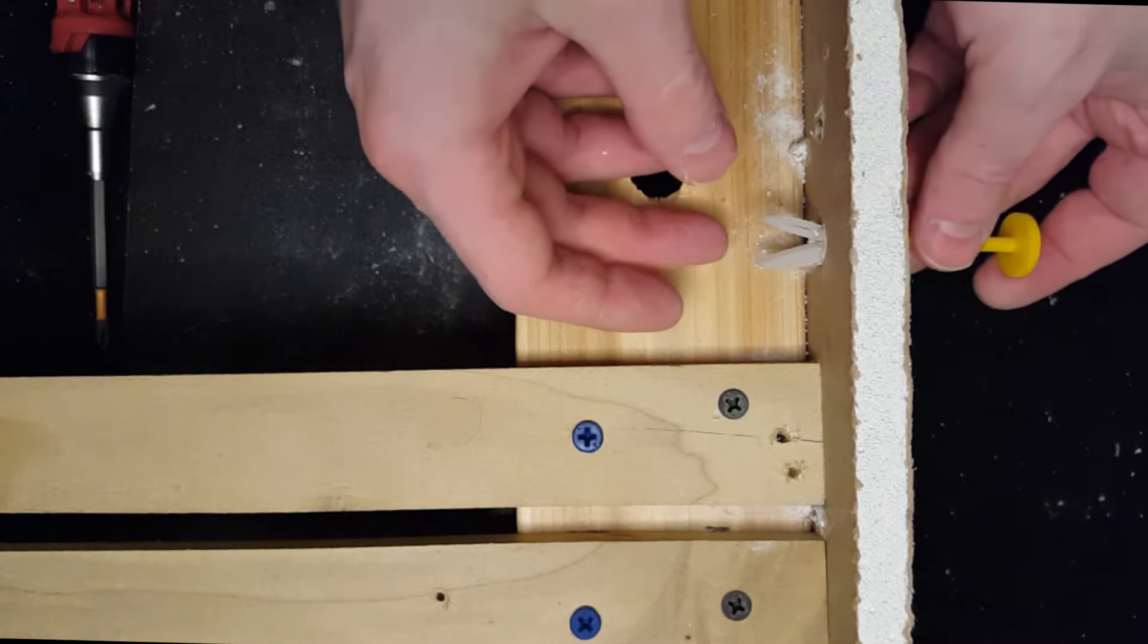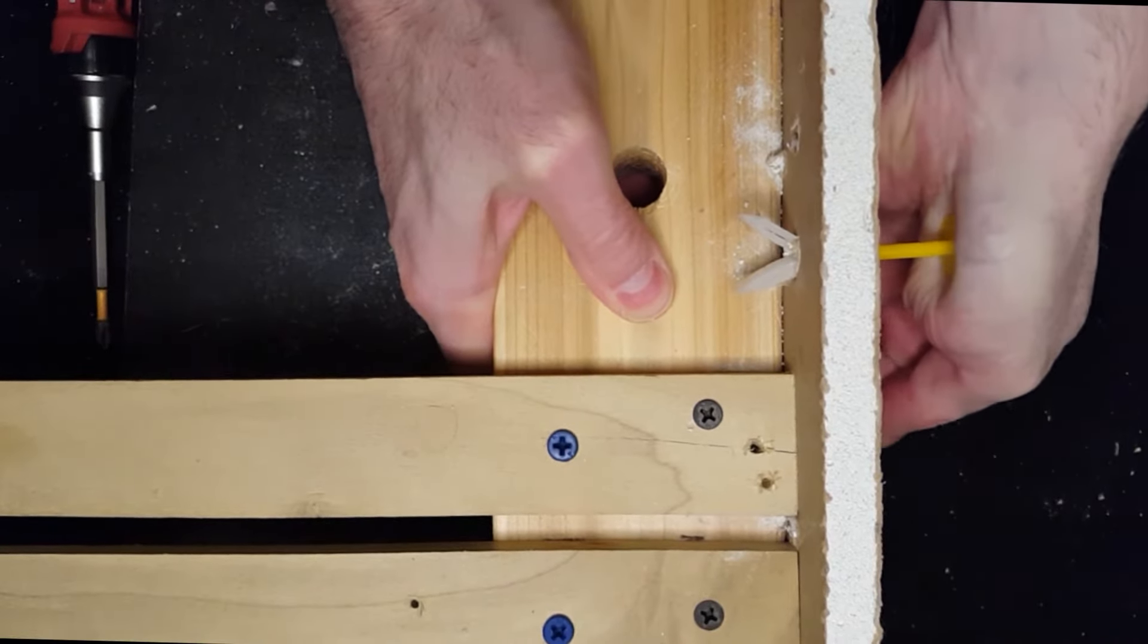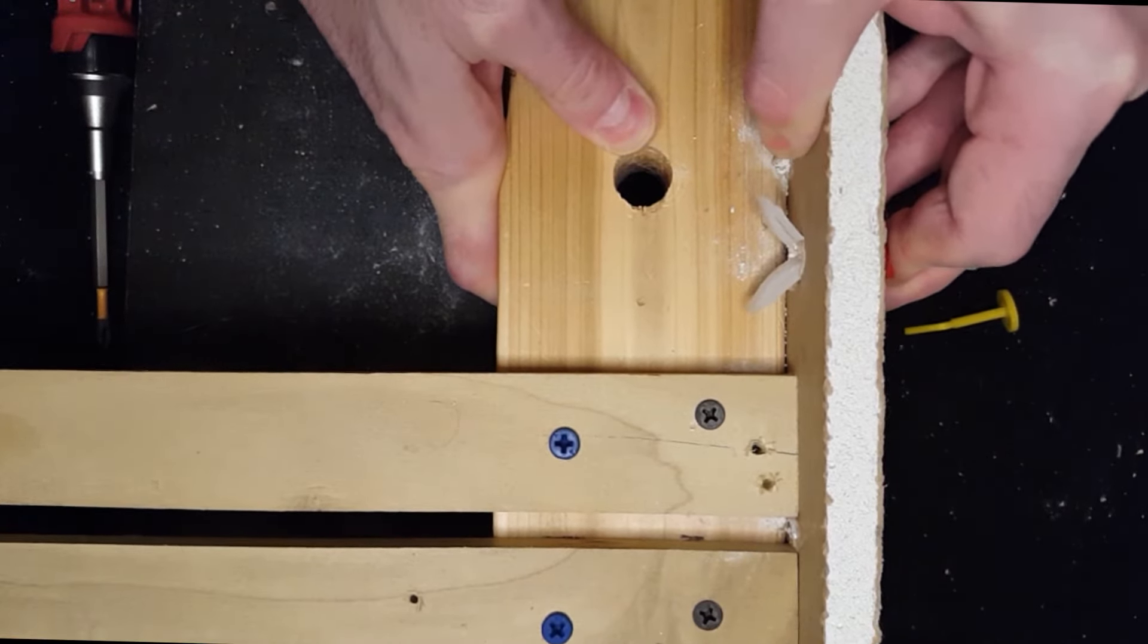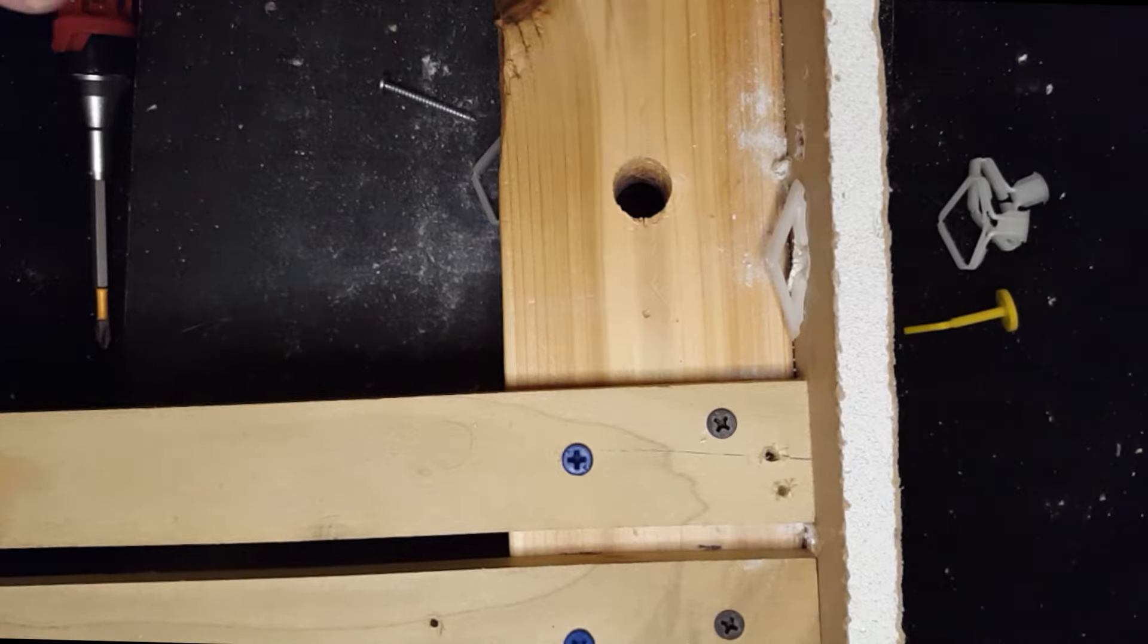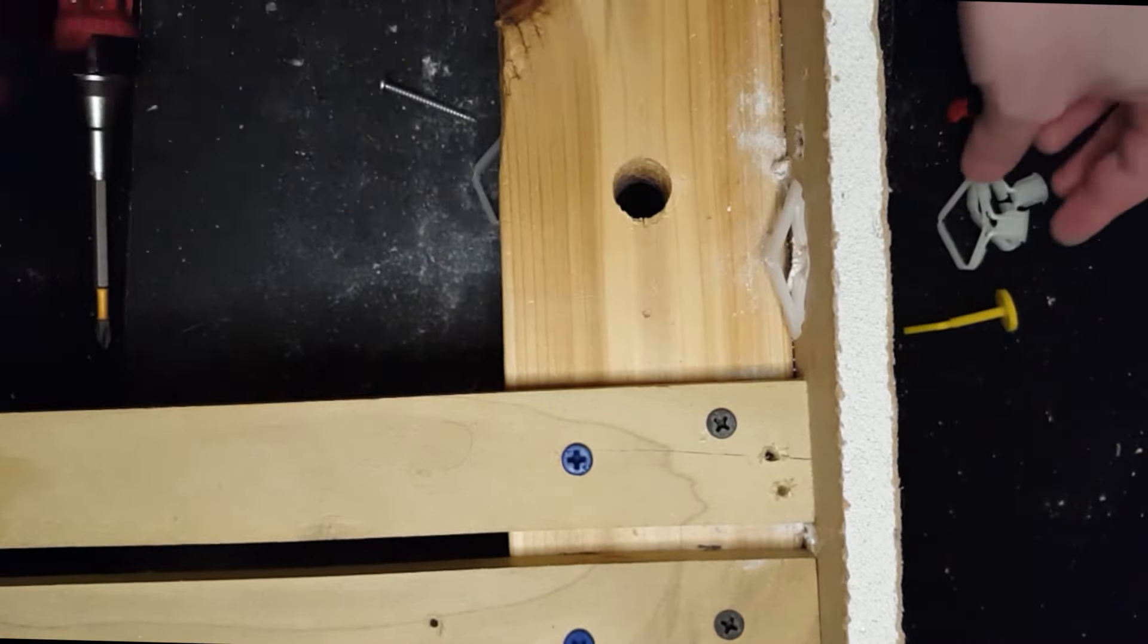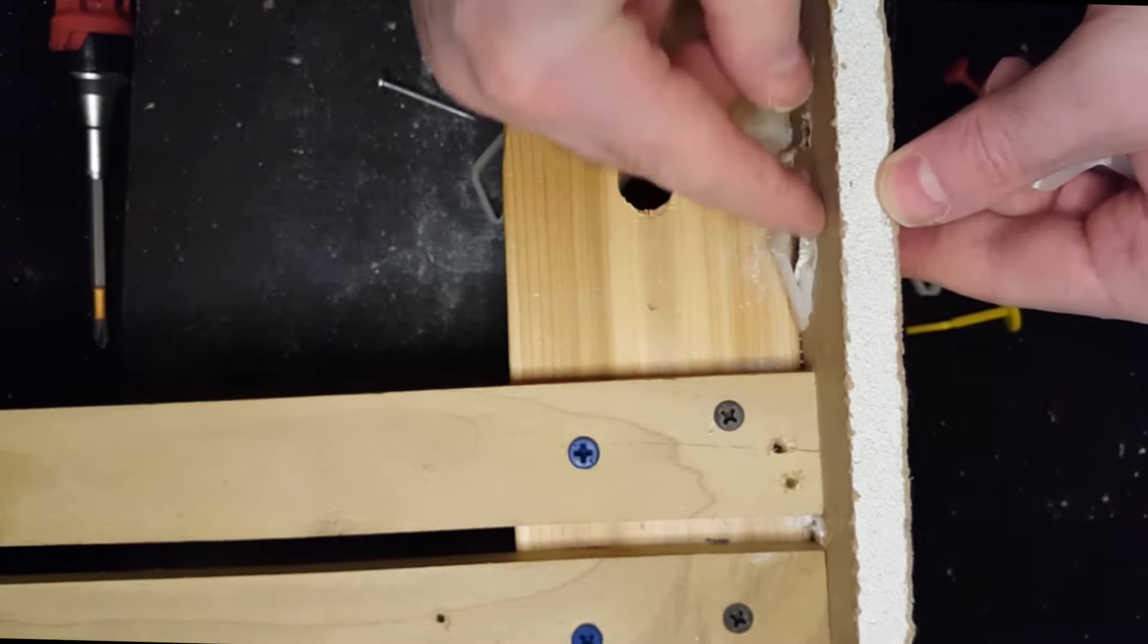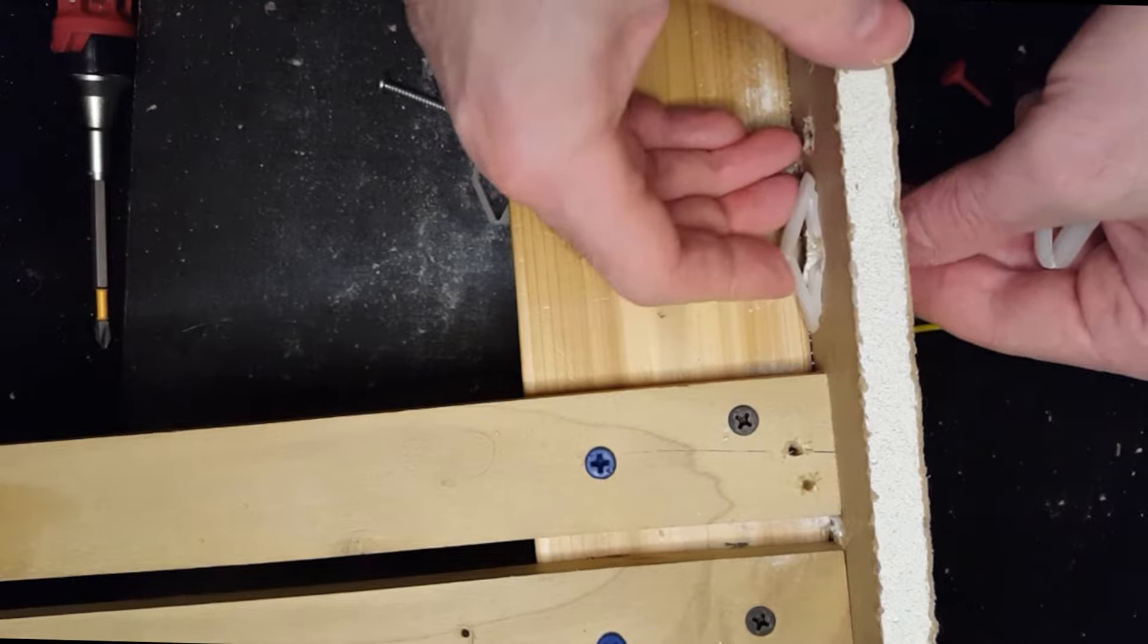And then to push out the trusses, as it's called, push that in. So let's try this one. Wow. So now we know why it's called a pop toggle - it really took quite a bit of force to get that behind. But as you can see, it's activated this truss. And when you put the screw in, it's going to hold these two parts here to push against these parts here that are flat up against the back of the wall. It's going to take a lot of force to be able to pull that out of the drywall.